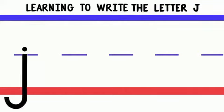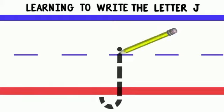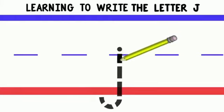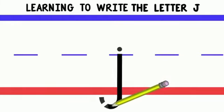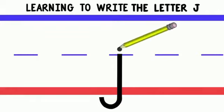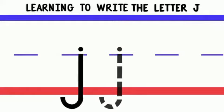Good job! Now let's write lowercase J. To write lowercase J, we'll start at the middle and draw a line down, then curve it at the bottom. Then go to the middle and do a little dot. Good job!